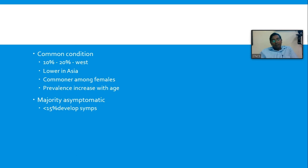The prevalence further increases when you are living to about 80 years. The majority — about 85 percent of gallstones — are asymptomatic. They don't cause any problems during your life. You live with gallstones and you die with gallstones; you don't die of gallstones. So in most people it is a benign condition, but in about less than 15 percent, gallstones tend to cause problems.